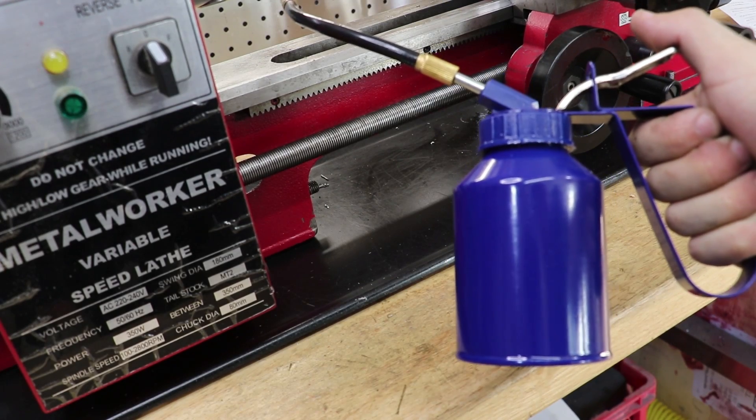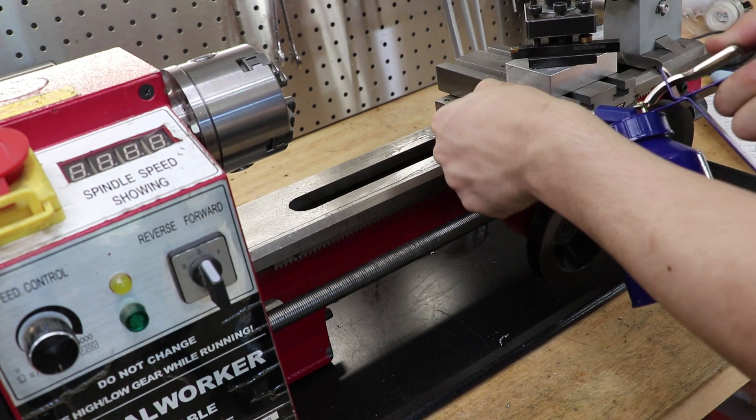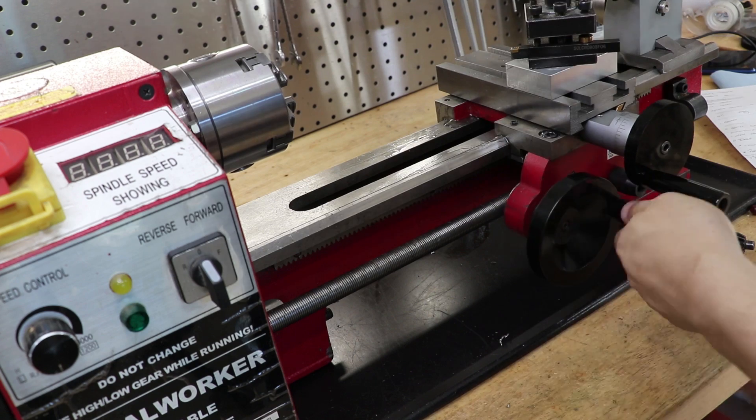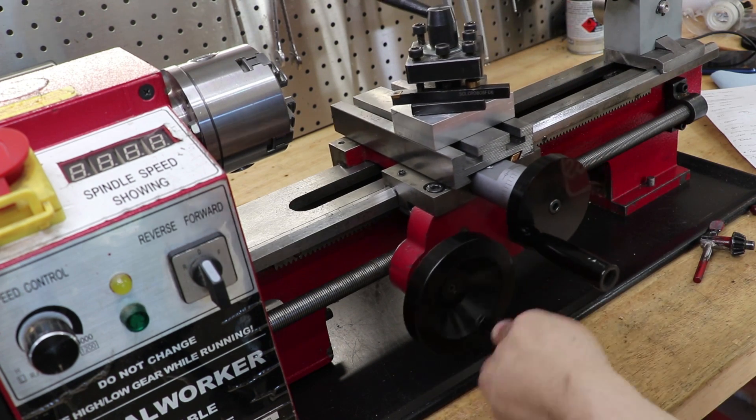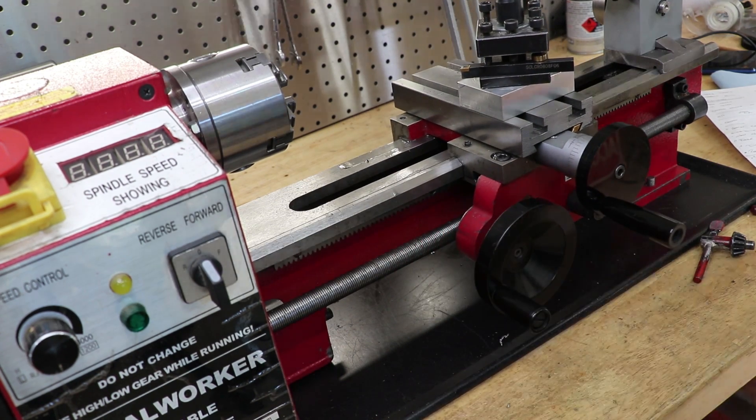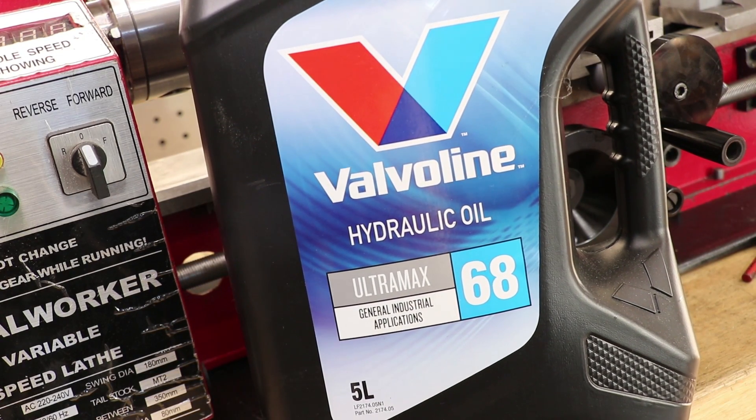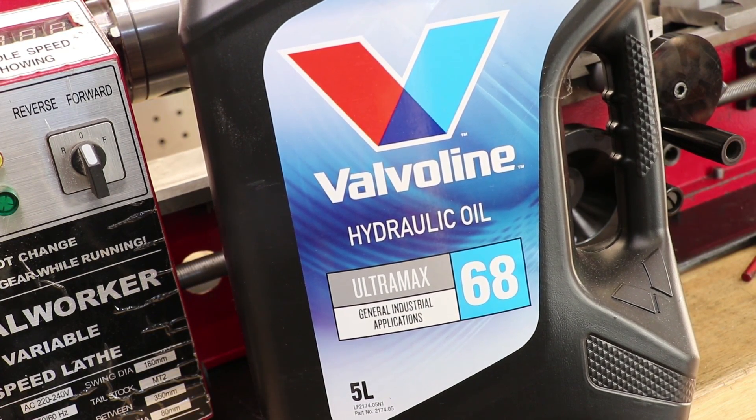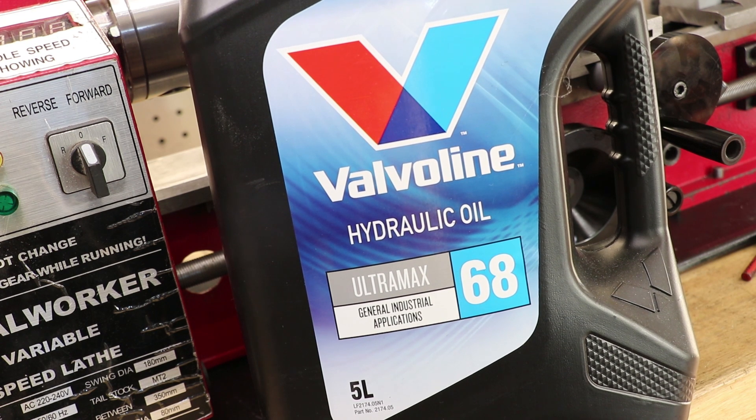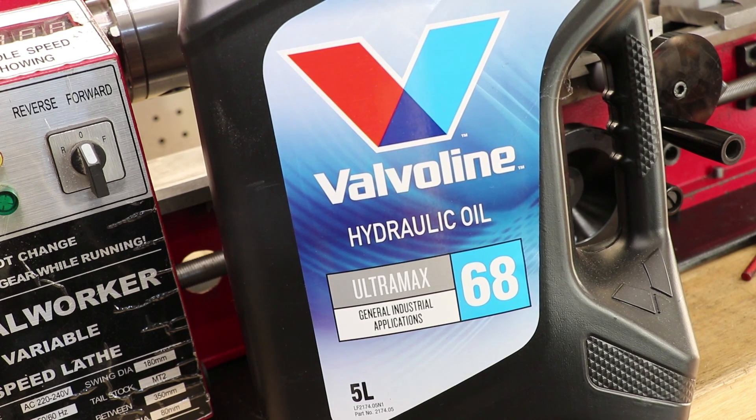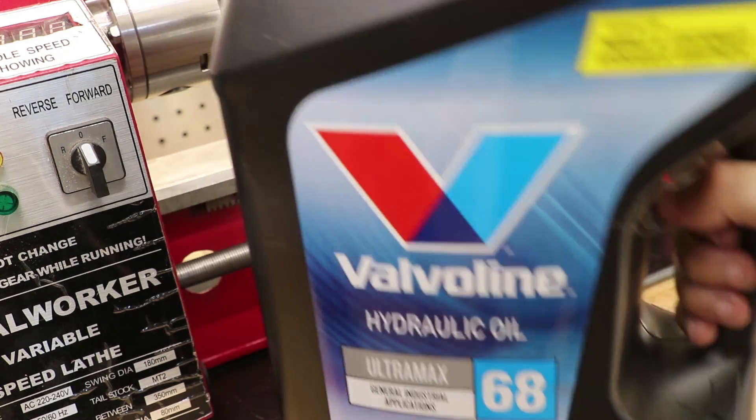And technically, whilst this isn't a tool, these machines do need lubrication on the ways and slides. The go-to is way oil, or if you can't find any, an ISO-68 hydraulic oil is really popular and works really well. You can usually get a litre of it for about $15, but I picked up a 5-litre container for about $35, and this is going to last me for years.